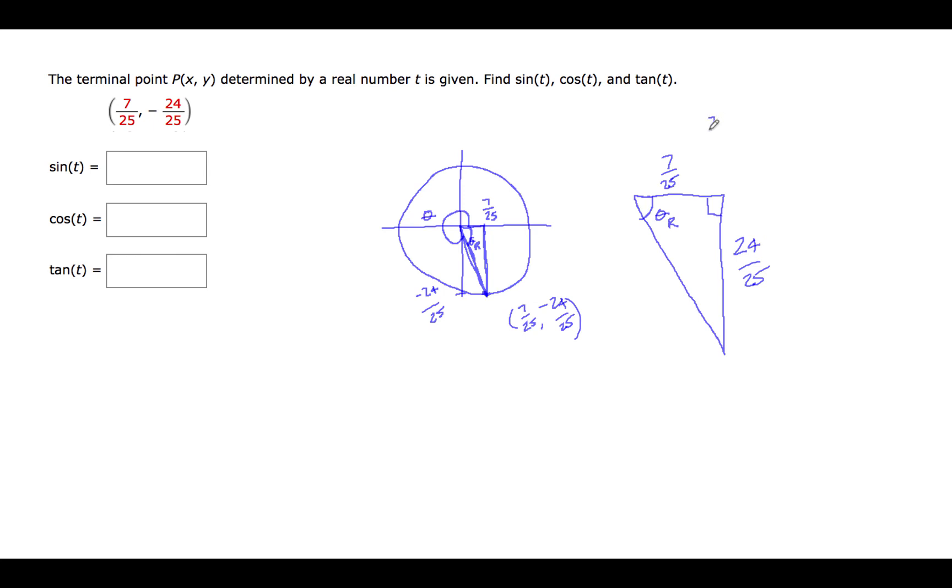Using the Pythagorean theorem, 7/25 squared plus 24/25 squared would be equal to this hypotenuse here. We'll call it r, r squared. So we would have 49 over 625 plus 576 over 625, and that would equal 625 over 625, or 1. So r squared is 1, so r is 1. So this side here, then, of this triangle is 1.